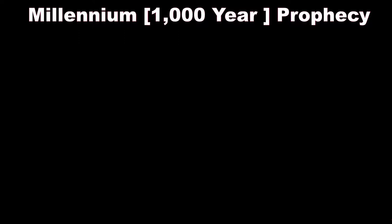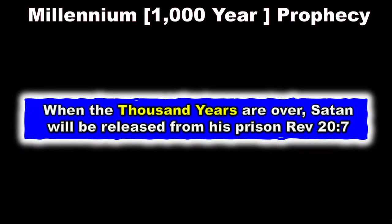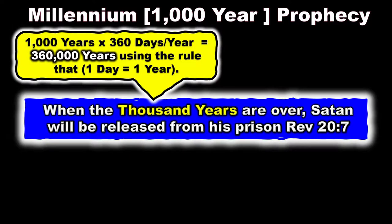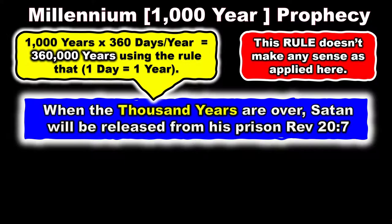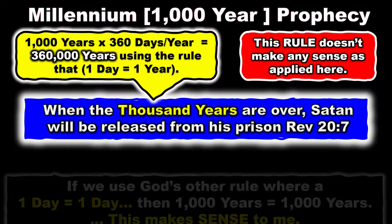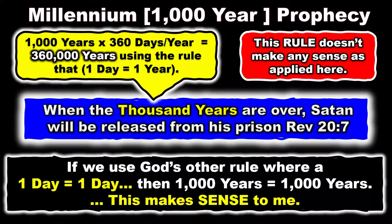The millennium is a thousand-year prophecy. 'When the thousand years are over, Satan will be released from his prison.' A thousand years times 360 days equals 360,000 years using the rule that one day equals a year. This rule doesn't make any sense as it is applied here. If we use God's other rule where a day equals a day, then a thousand years equals a thousand years. This makes sense.